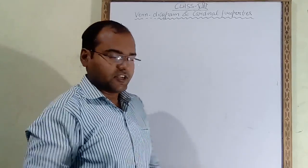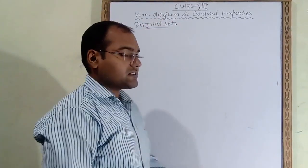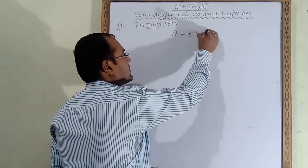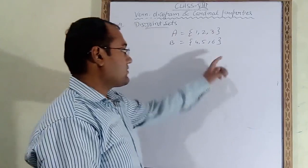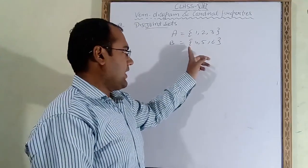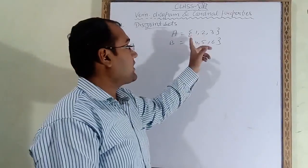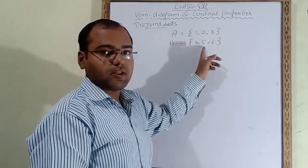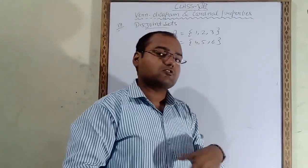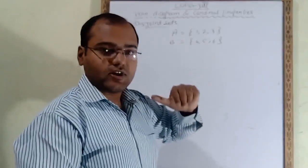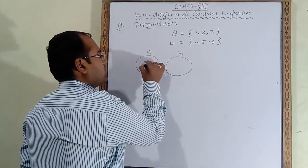The third case is disjoint sets. Suppose set A has elements 1, 2, 3 and set B has elements 4, 5, 6. The elements of A are not in B and the elements of B are not in A, so this is not a subset. And since nothing is common, this is not overlapping either. These two sets are called disjoint sets.